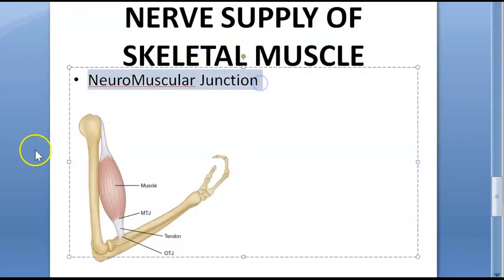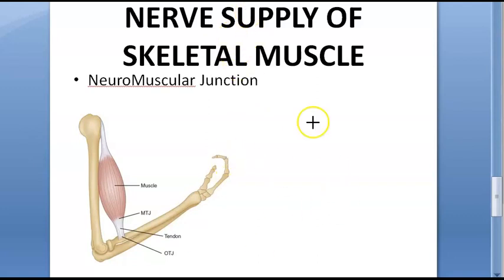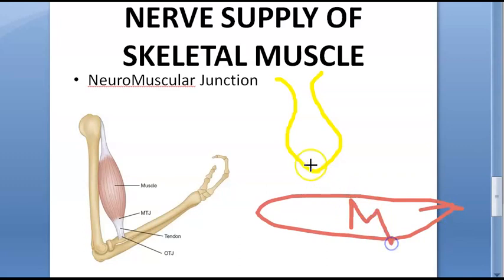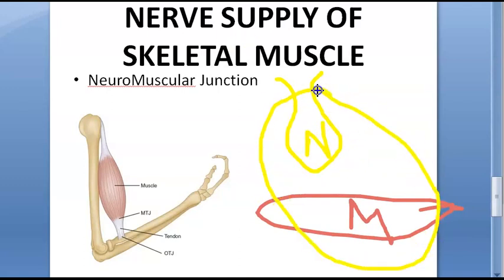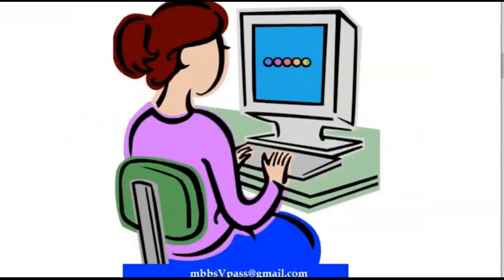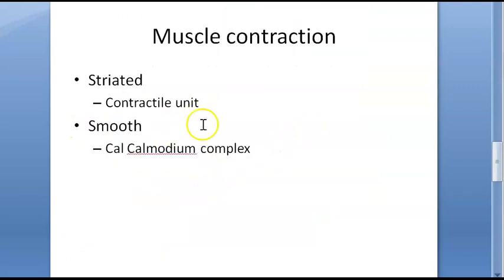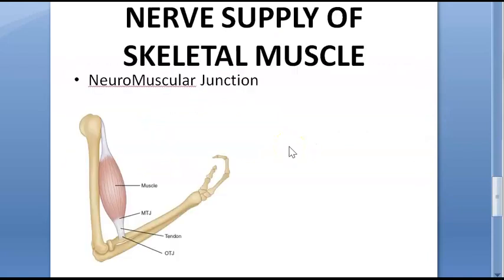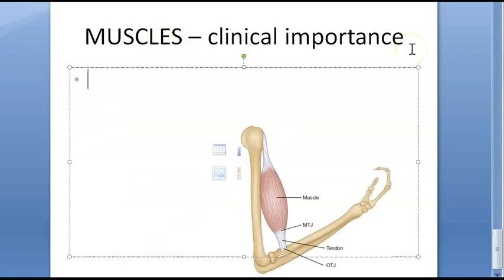Now we look at the neuromuscular junction, which is very important. A nerve supplies the muscle; when the nerve says 'contract,' the muscle contracts. The neuromuscular junction has a presynaptic membrane, a postsynaptic membrane, and a synapse in between. Vesicles release acetylcholine, which is received by the muscle. Only when the nerve signals via acetylcholine does the contractile unit activate.